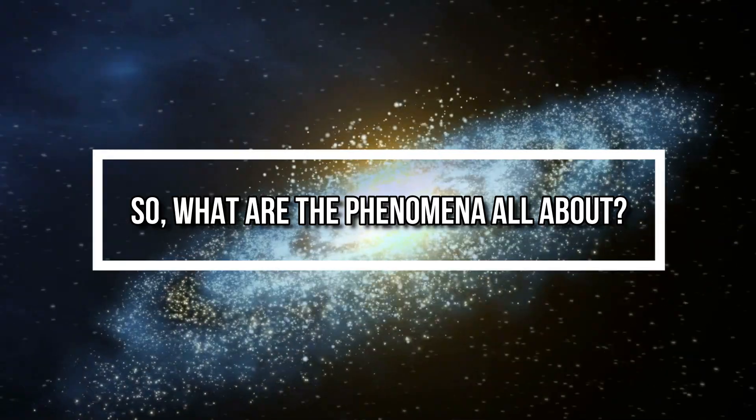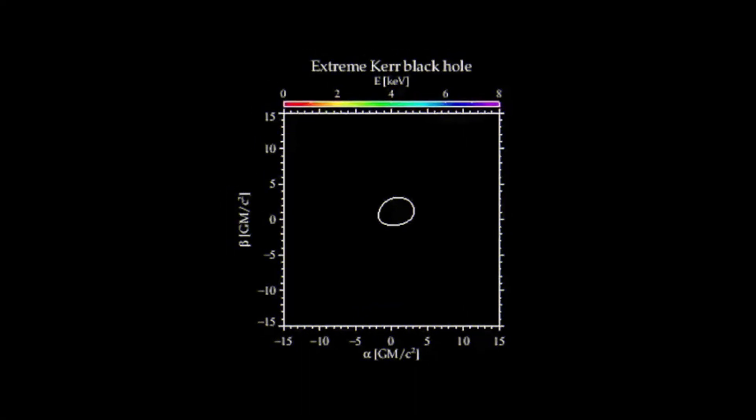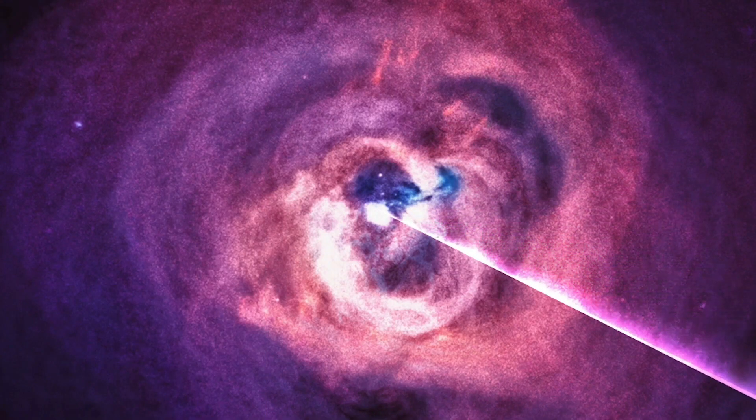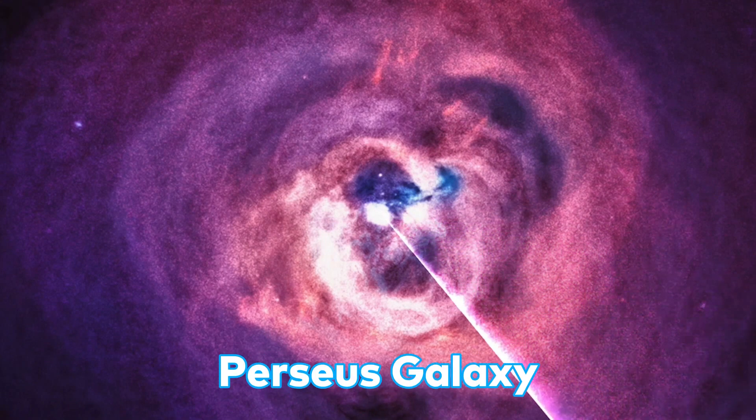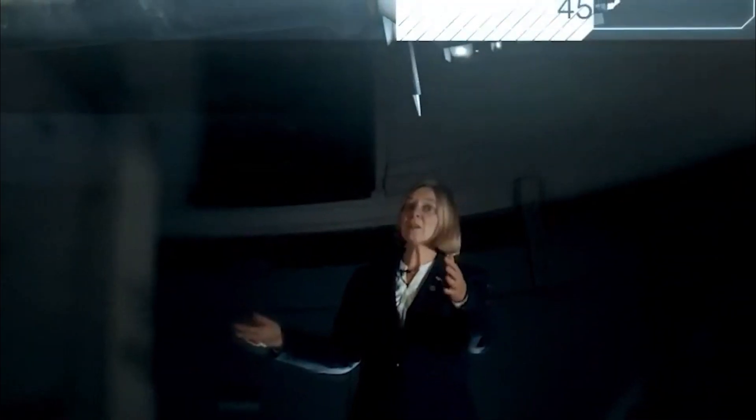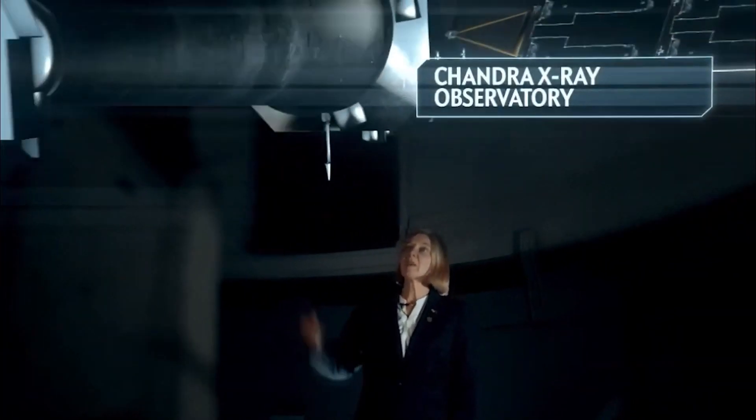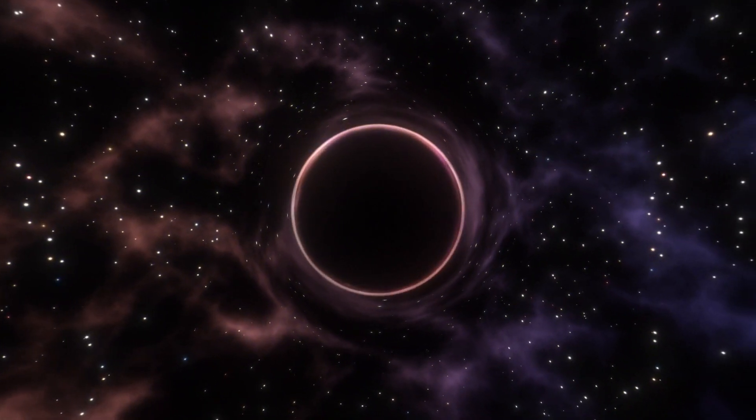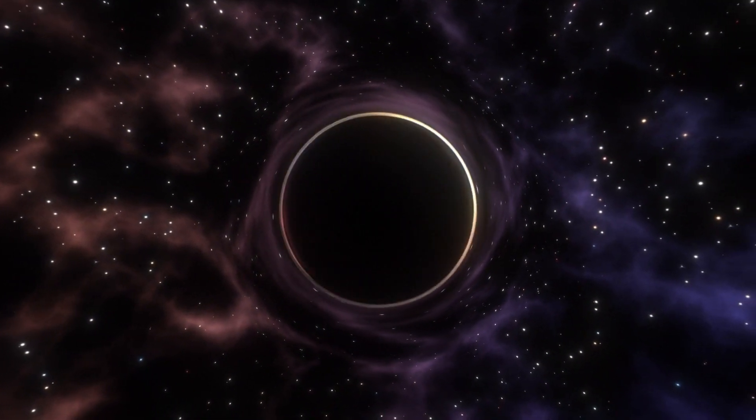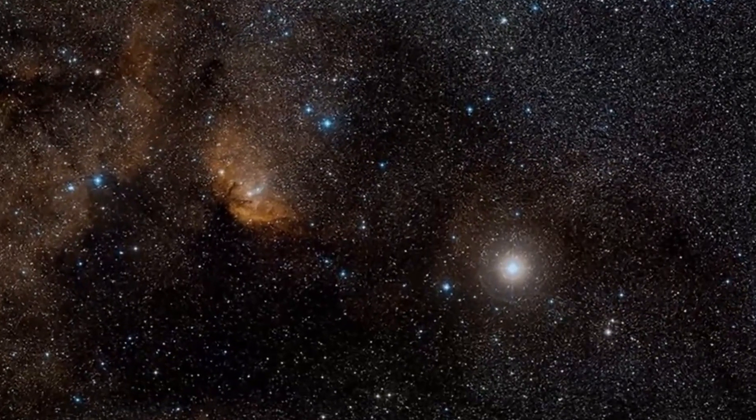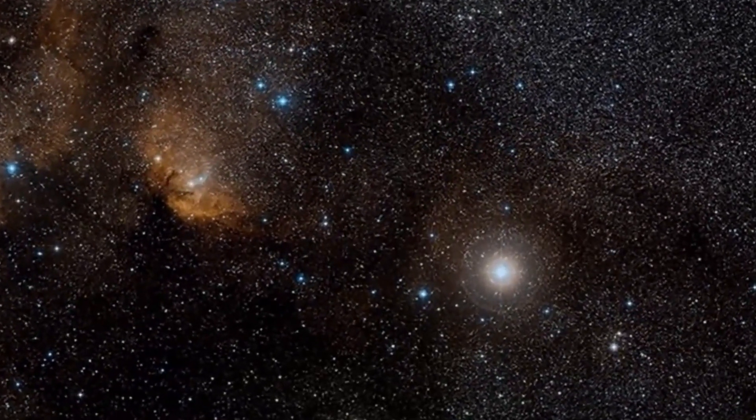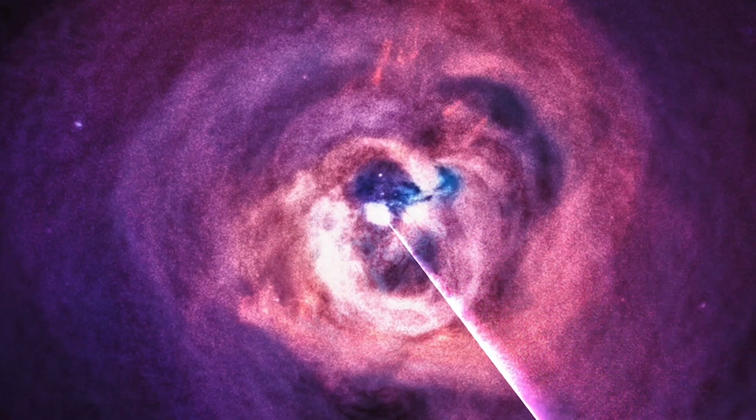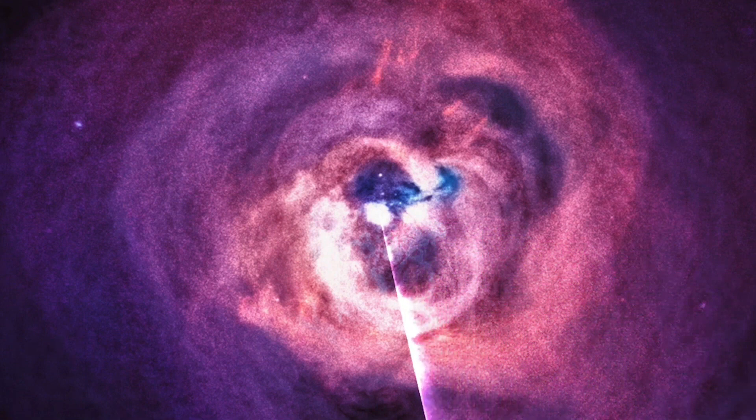So, what are the phenomena all about? You see, NASA astronomers were able to trace the echo of these noises back to a black hole at the heart of the Perseus galaxy. The signal was detected by the Chandra X-ray Observatory, which is in orbit around Earth. The observatory detected tens of millions of black holes scattered all over our Milky Way galaxy, with some of them sounding like lost ghosts. Very eerie.